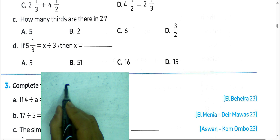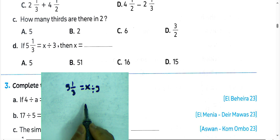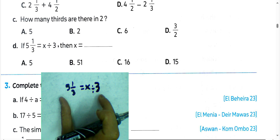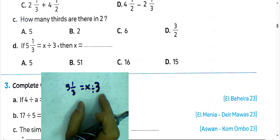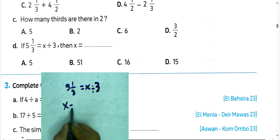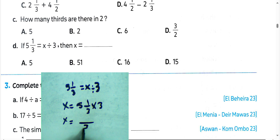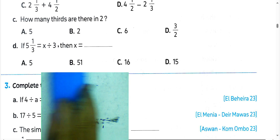5 and one-third equals x divided by 3. What number divided by 3 equals 5 and one-third? We can find the dividend by multiplying the divisor by the quotient. So x equals 5 and one-third multiplied by 3. Converting: 3 times 5 is 15, plus 1 equals 16, multiplied by 3. Then 3 divided by 3 is 1, and 1 times 16 equals 16, so the result will be 16.